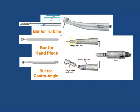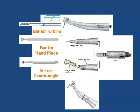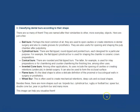The last handpiece type is the straight nose cone, which also works on friction grip but uses very long burrs. Both the straight nose cone and contra-angle connect to an electric motor, unlike the high-speed handpiece which uses a turbine. The turbine spins much faster, while the motor-driven handpieces move slower. Some contra-angle handpieces have textured grips for comfort, while others have smooth ergonomic designs.